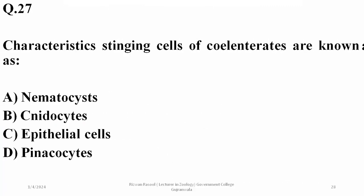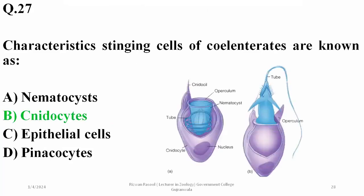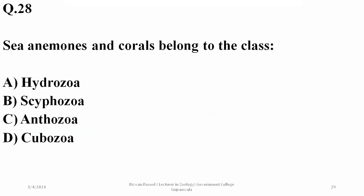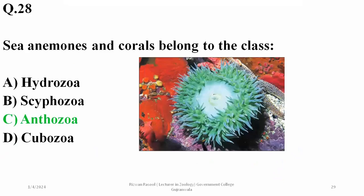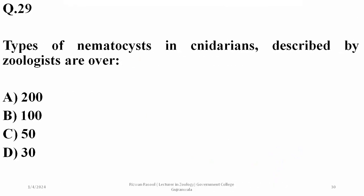Question 27: the characteristic stinging cells of cnidarians are known as cnidocytes, while nematocysts are the internal structures involved in stinging — they are not the cells themselves; the cell is referred to as a cnidocyte, so B is correct. Sea anemones and corals belong to class Anthozoa. The types of nematocysts in cnidarians described by zoologists are just over 30, so D is the right option.